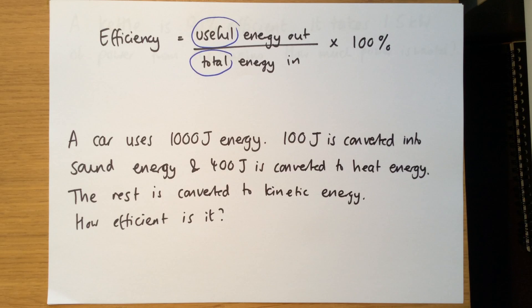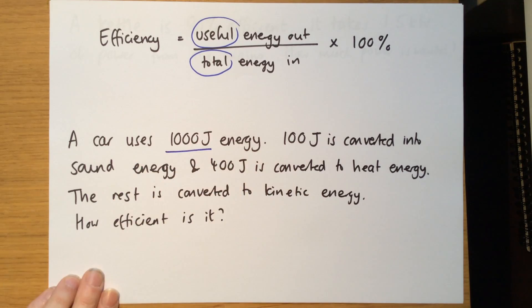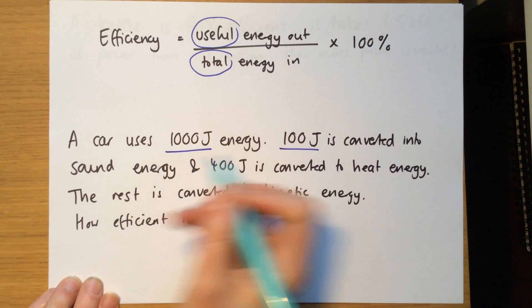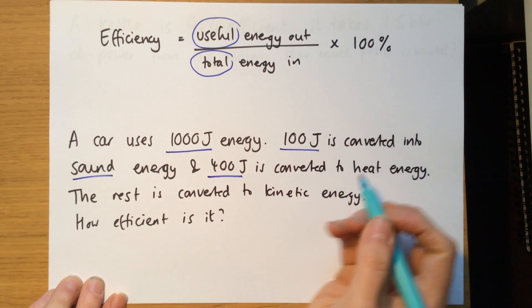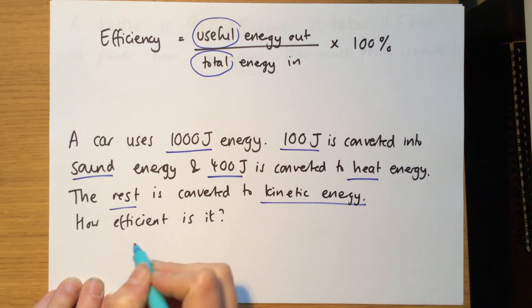So the easiest way to think about this is to look at an example. And we've got here that a car uses 1,000 joules of energy. 100 joules is converted into sound, 400 joules is converted to heat. The rest is converted to kinetic energy. How efficient is it?